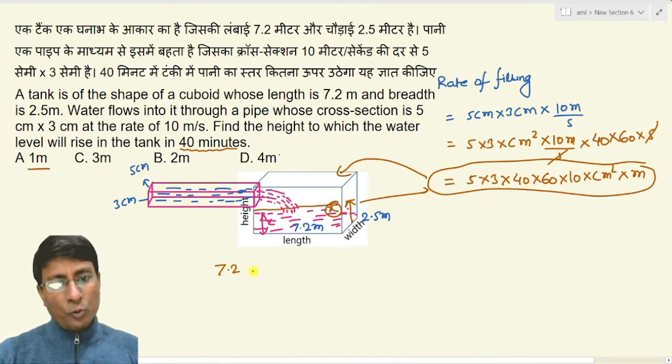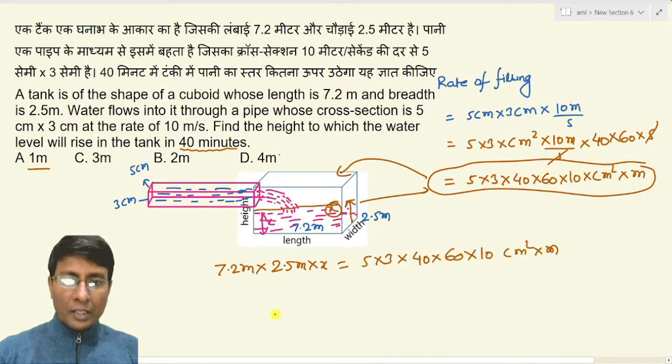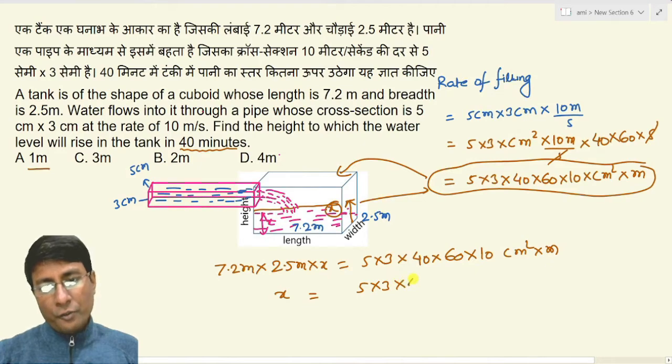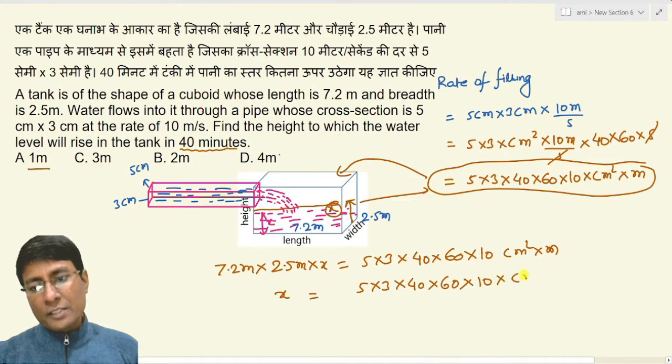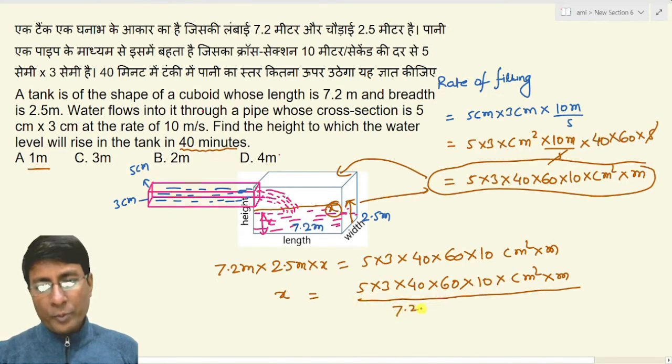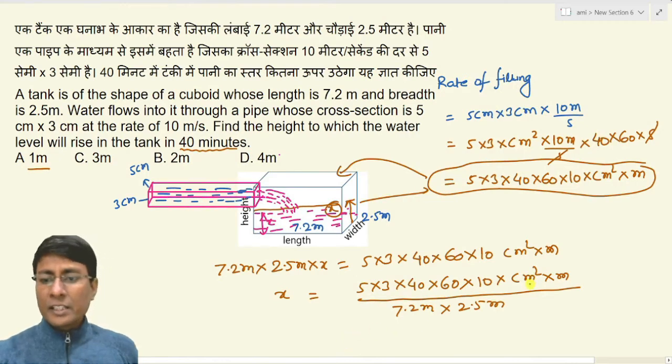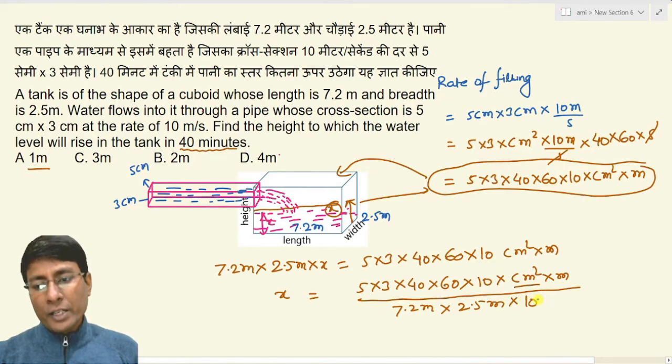Then x level can be found from volume. So this volume is equal to 5 into 3 centimeters squared into 10 meters per second into 40 minutes converted to seconds. Here the denominator is 7.2 meters into 2.5 meters.